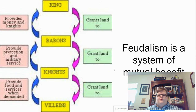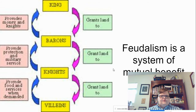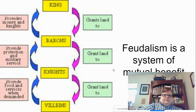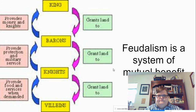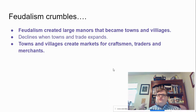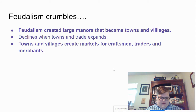Feudalism is a system of mutual benefit. Going from the top down, every person above grants land to the person below, and from the bottom up, every person below provides service upward. Feudalism crumbles after that because feudalism creates large manors that become towns and villages, and feudalism declines when those towns and trade expand, because they create markets for craftsmen, traders, and merchants. If you need to pause this video, please do so now.